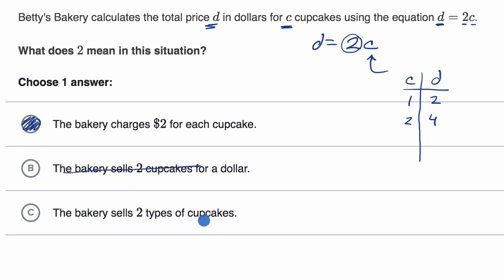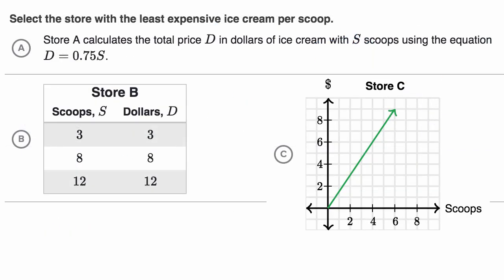The bakery sells 2 types of cupcakes. Well, they don't say anything about that, so I'll rule that out as well. Let's do another one. Here, we are told select the store with the least expensive ice cream per scoop. There's definitely a dessert theme going on over here. All right, so pause this video and see if you can work it out. Is it choice A, choice B, or choice C?